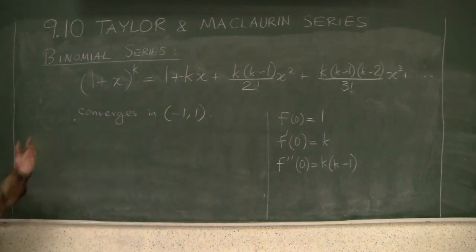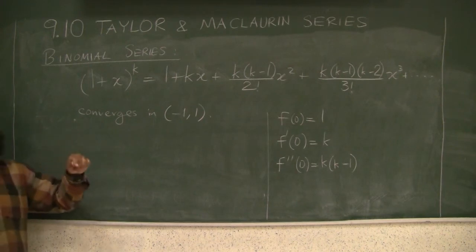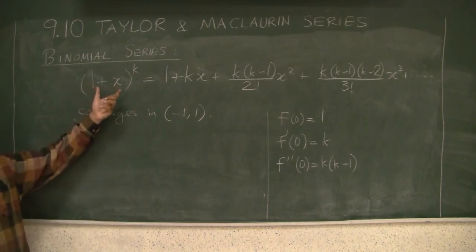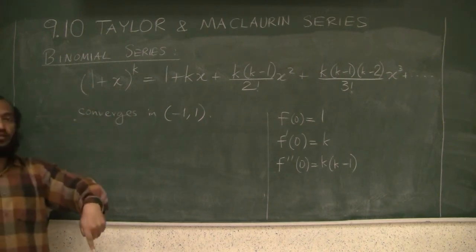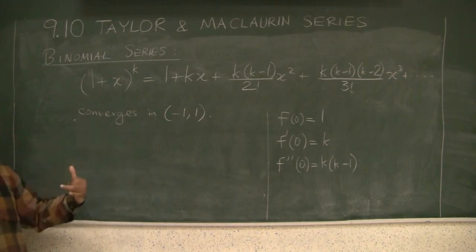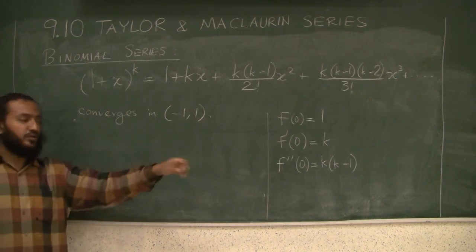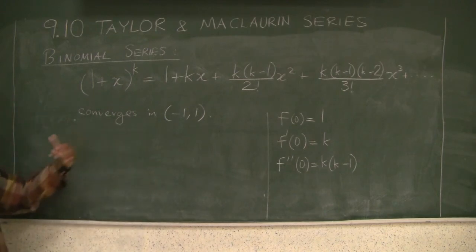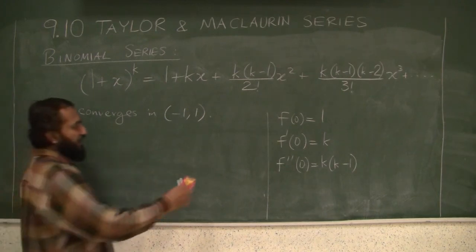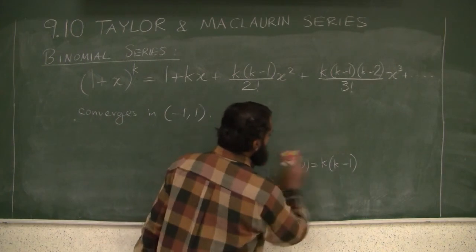You can check the ratio test yourself. However, that itself doesn't show you that it converges necessarily to this function. For that, you have to use the error—you have to look at the (n+1) error and see that the error goes to 0 as n goes to infinity. I'm not going to do that, but what I'll do right now is an example.